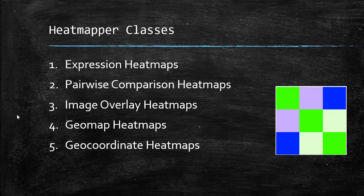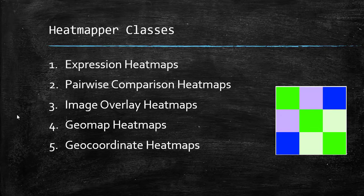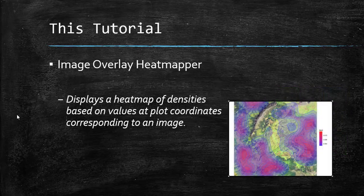Heatmapper has 5 different classes of heatmaps: Expression heatmaps, Pairwise Comparison heatmaps, ImageOverlay heatmaps, GeoMaps, and GeoCoordinate heatmaps. This tutorial only deals with the image overlay heatmaps.